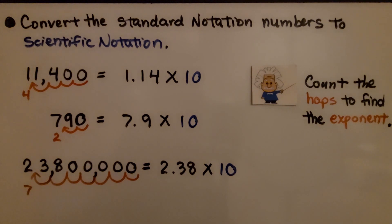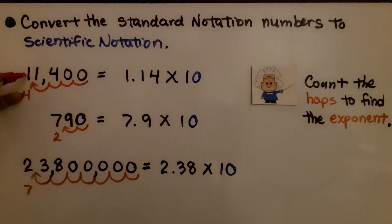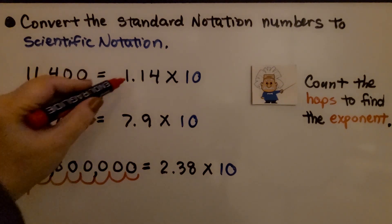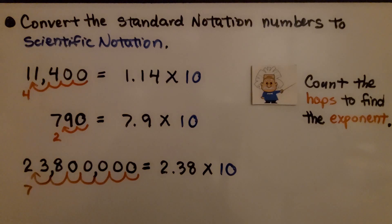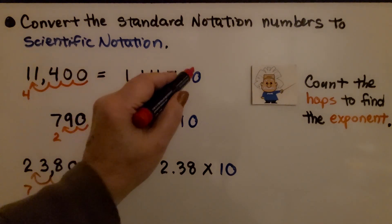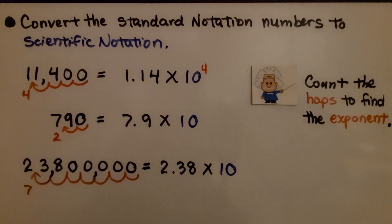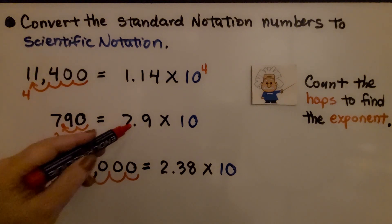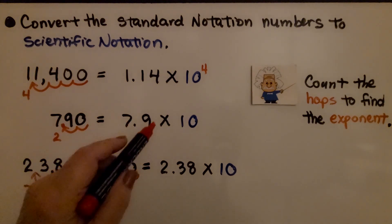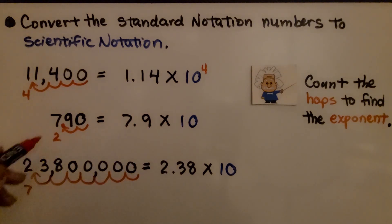Let's quickly walk through a few more examples — converting the standard notation numbers to scientific notation. The first one is 11,400. We count the hops to put a decimal point between the first digit and the next digit, so we would have 1.14 — that's 4 hops. We write it as 1.14 times 10 raised to the fourth power. Here we have 790 — we count 1, 2 hops — our decimal point goes here, so we have 7.9, and we write it as 7.9 times 10 to the second power because we have 2 hops.